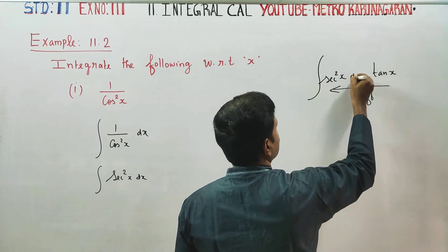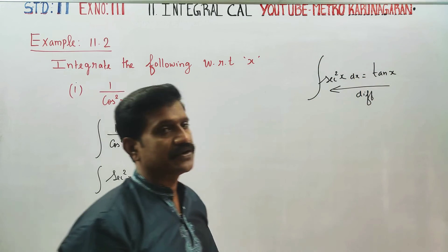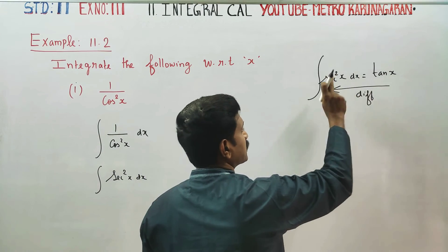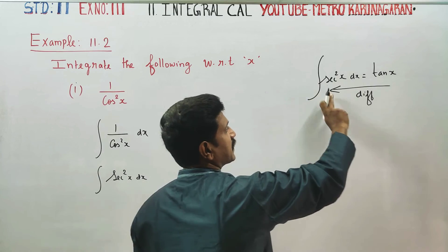Anna secant square x integrate pundingi na, tan x vundu. Differentiation o'day opposite process thang ullakki integration. Tan x differentiate pundingi na secant square x. Secant square x integrate pundingi na, tan x.